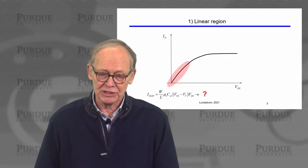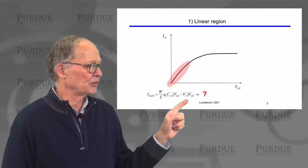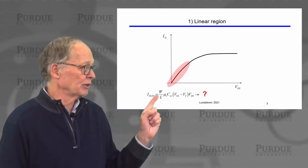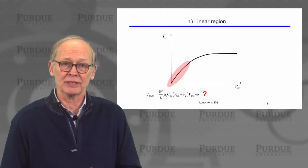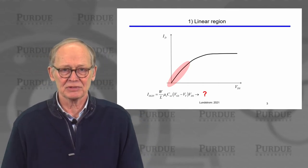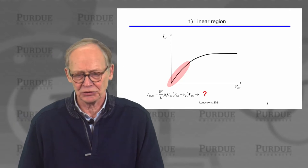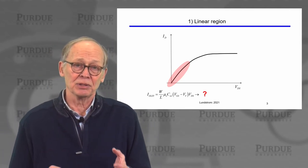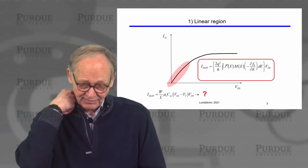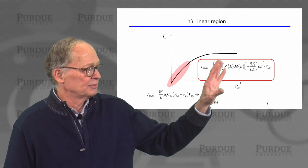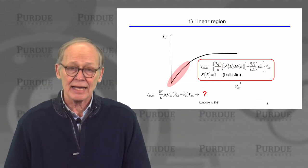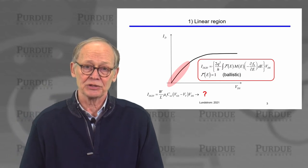In the linear region, our conventional textbook description has been around since the 1960s. A key parameter is the mobility, mu sub n, which is related to the mean free path for scattering in a bulk semiconductor or a long channel MOSFET. How does this change for the ballistic MOSFET in which there is no scattering? We have our expression simplified for low voltage between the drain and the source, assuming transmission is equal to 1.